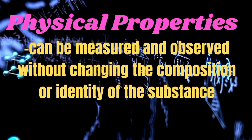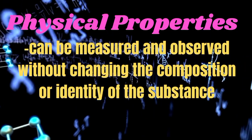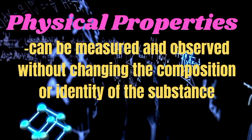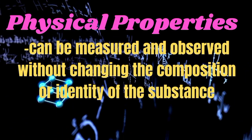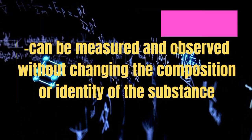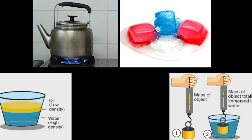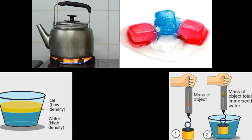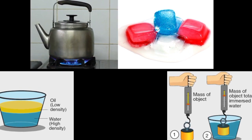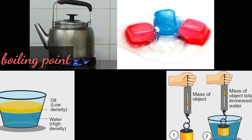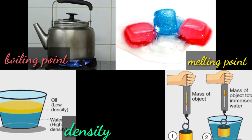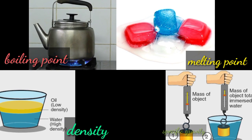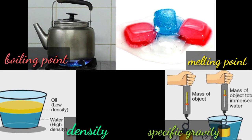Physical properties can be measured and observed without changing the composition or identity of the substance. The different physical properties of matter discussed in this video are boiling point, melting point, density, and specific gravity.